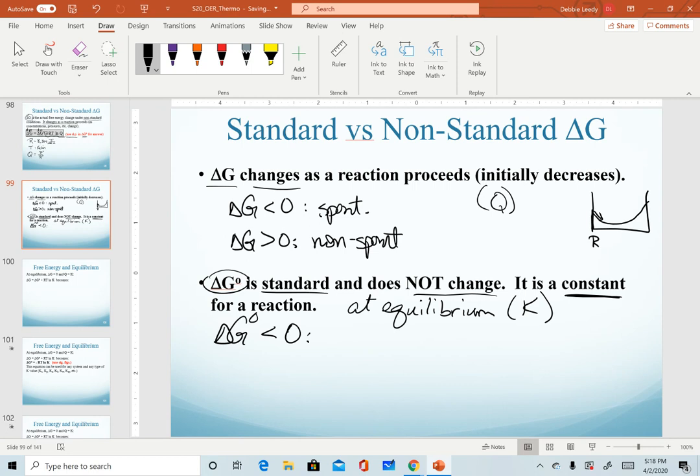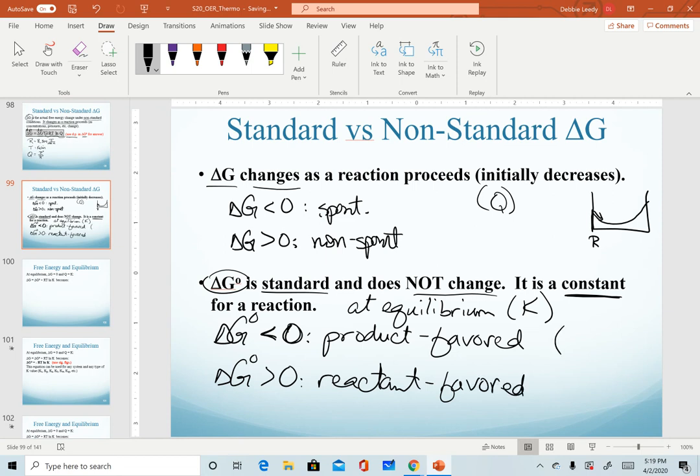So when we calculate that the delta G naught for a given reaction is negative or less than zero, this tells us our reaction is product favored at equilibrium. And when we calculate that delta G naught is positive, that tells us that our reaction is reactant favored at equilibrium. We can relate these quantities back to K. For a product favored reaction, we have a large K value greater than one. For a reactant favored system, we have a small K value less than one.